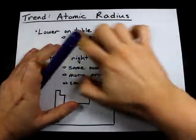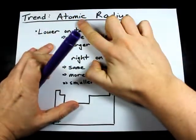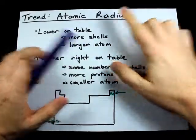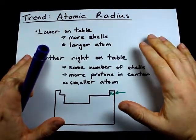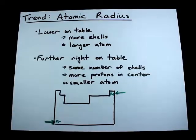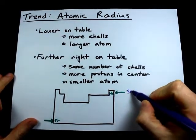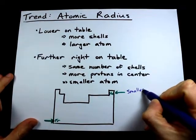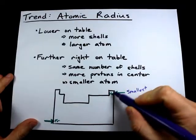Alright, what's up guys? Today we're going to talk about a periodic trend called atomic radius. This is how large each atom is. The smallest atom on the periodic table is helium, which is in the top right corner.